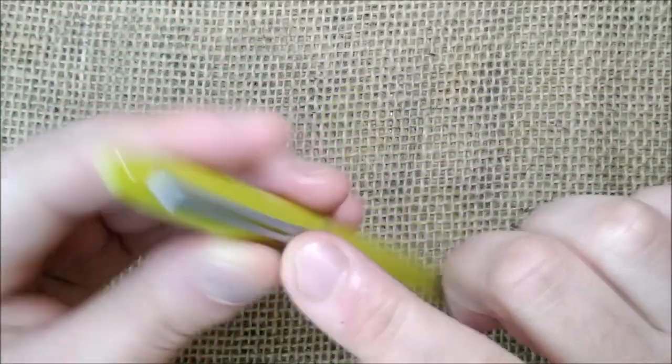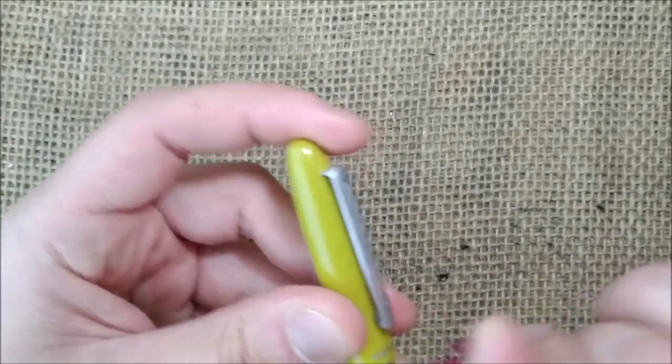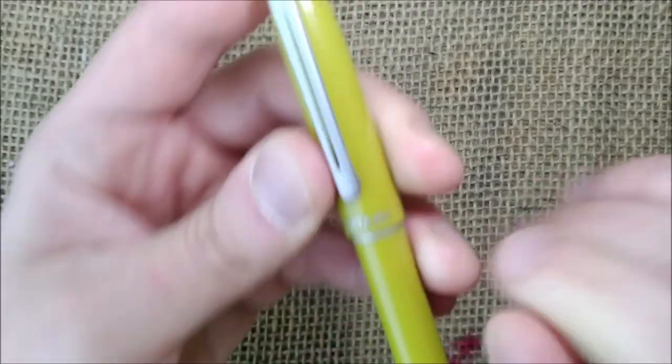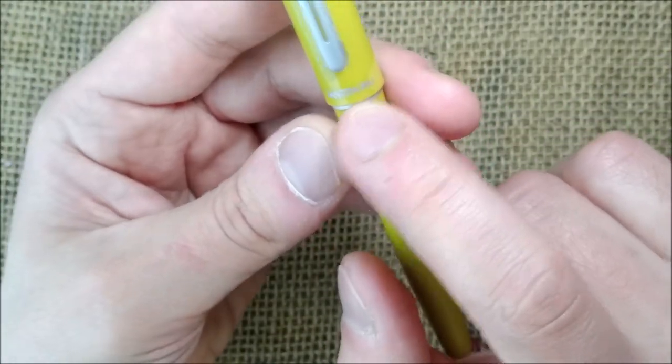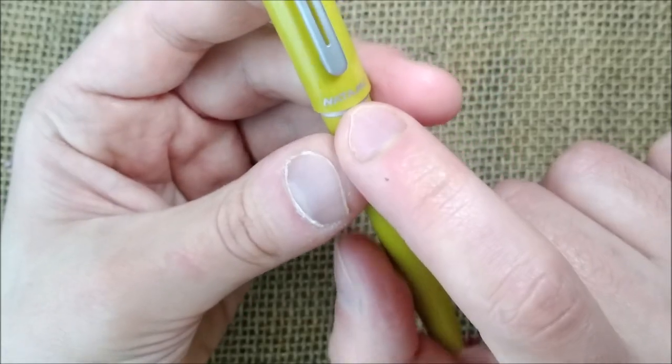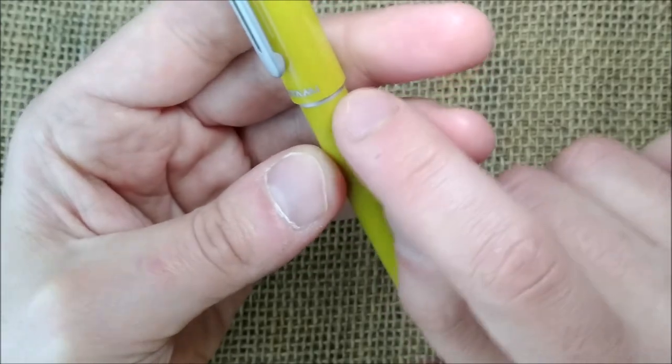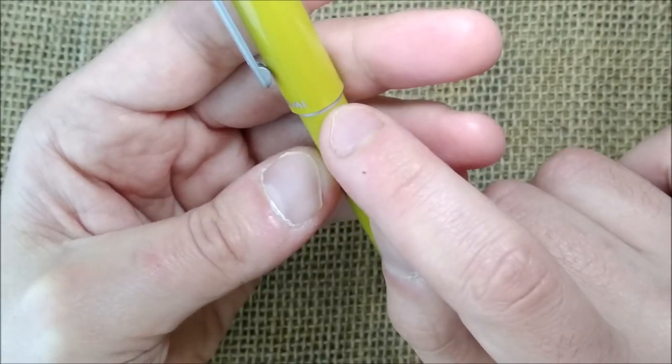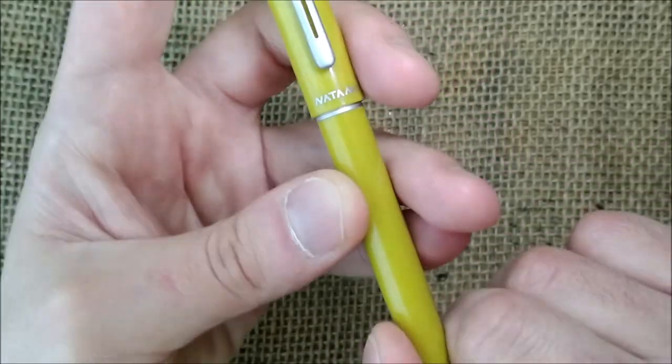It has the clip which is in this frosted metal and it is quite nice clip in this frosted silver metal. You also have in silver the imprint there that says Natami and you can see the ring on the barrel or the section beneath the cap.